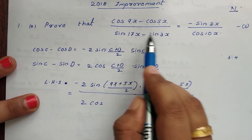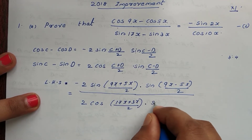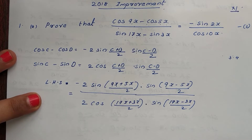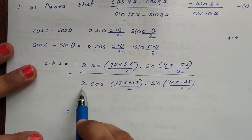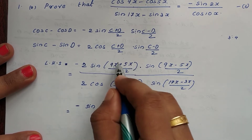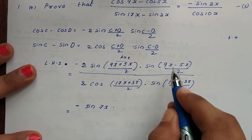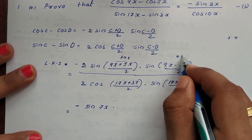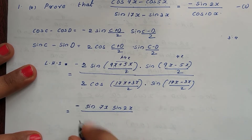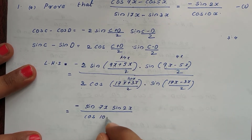Applying the formula: in the numerator we get sin[(9x+5x)/2] which is sin(14x/2) = sin7x, and sin[(9x-5x)/2] = sin(4x/2) = sin2x. In the denominator we get cos[(17x+3x)/2] = cos(20x/2) = cos10x, and sin[(17x-3x)/2] = sin(14x/2) = sin7x.